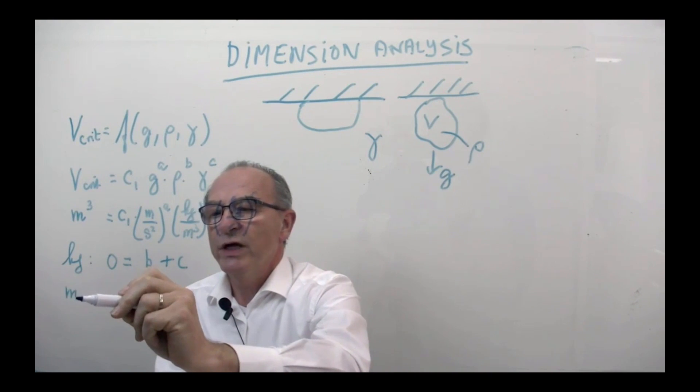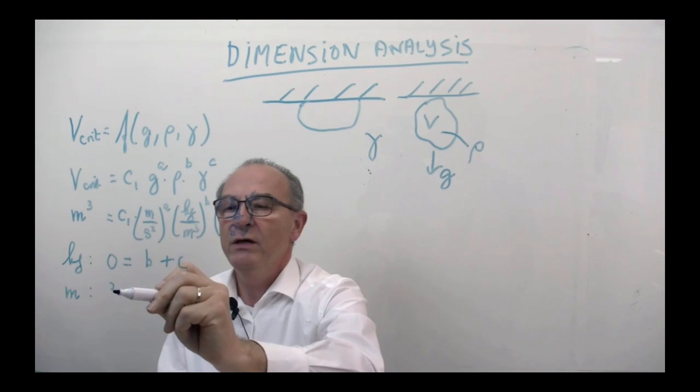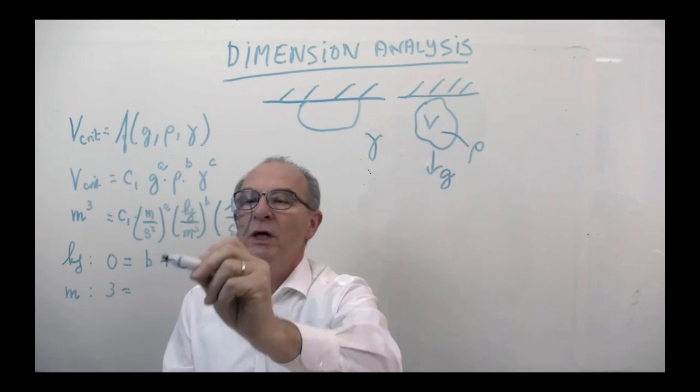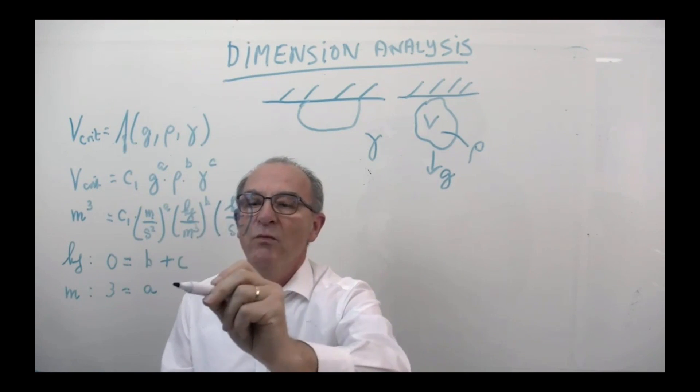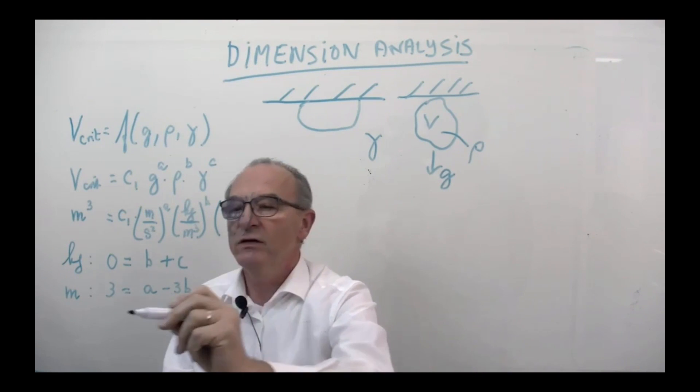Similar, what we are doing is with meters. We look at this side, we see three is equal to A minus three B, and in this case we don't see any meters.